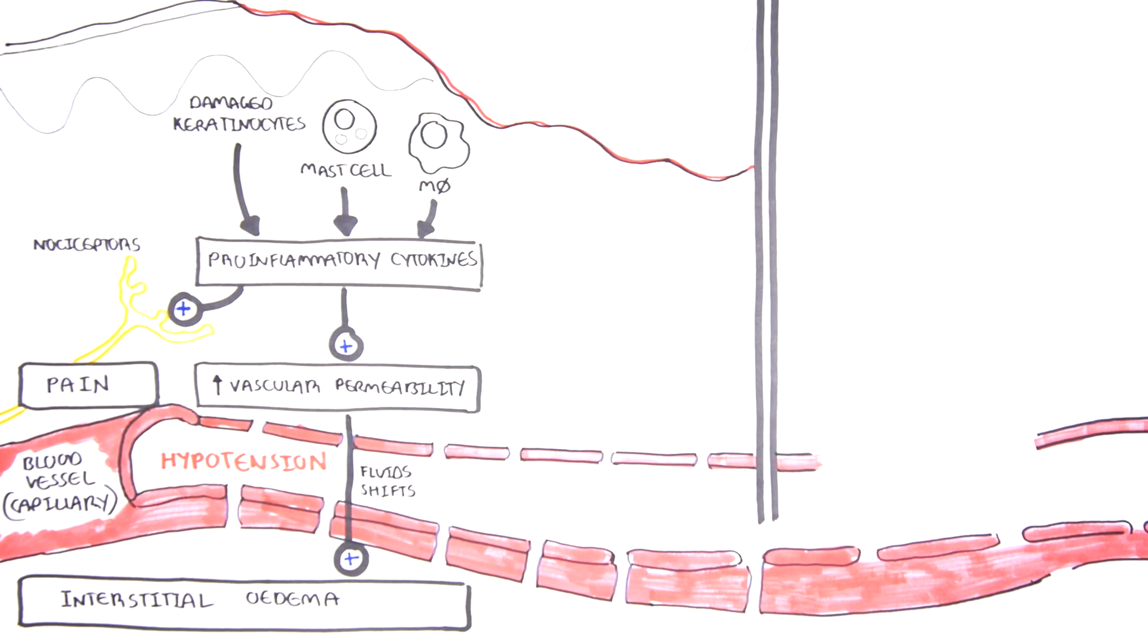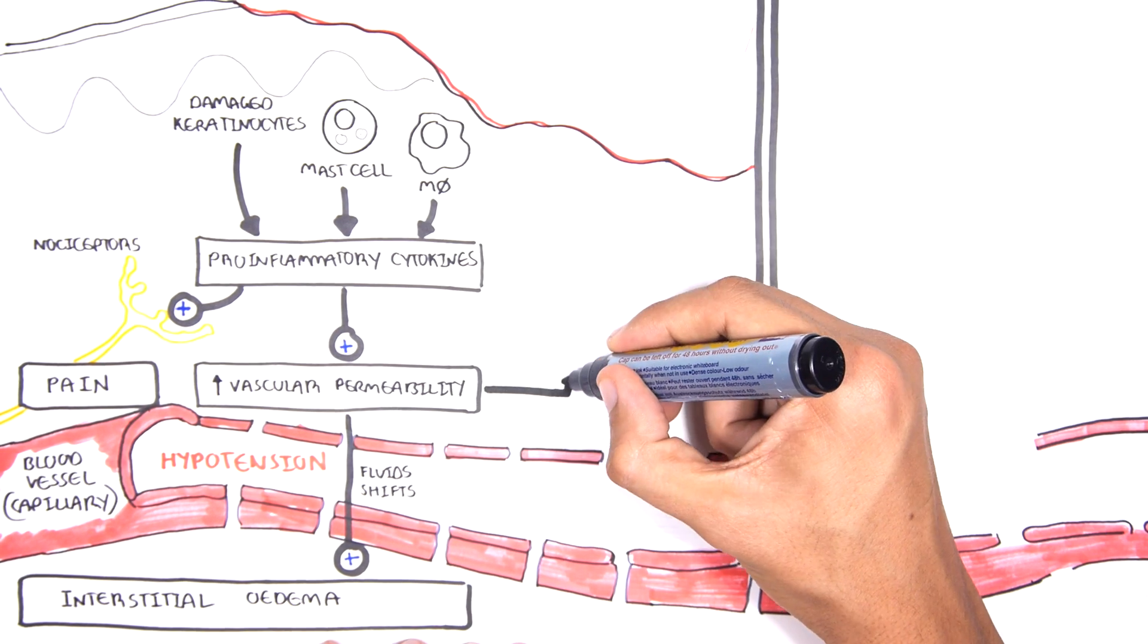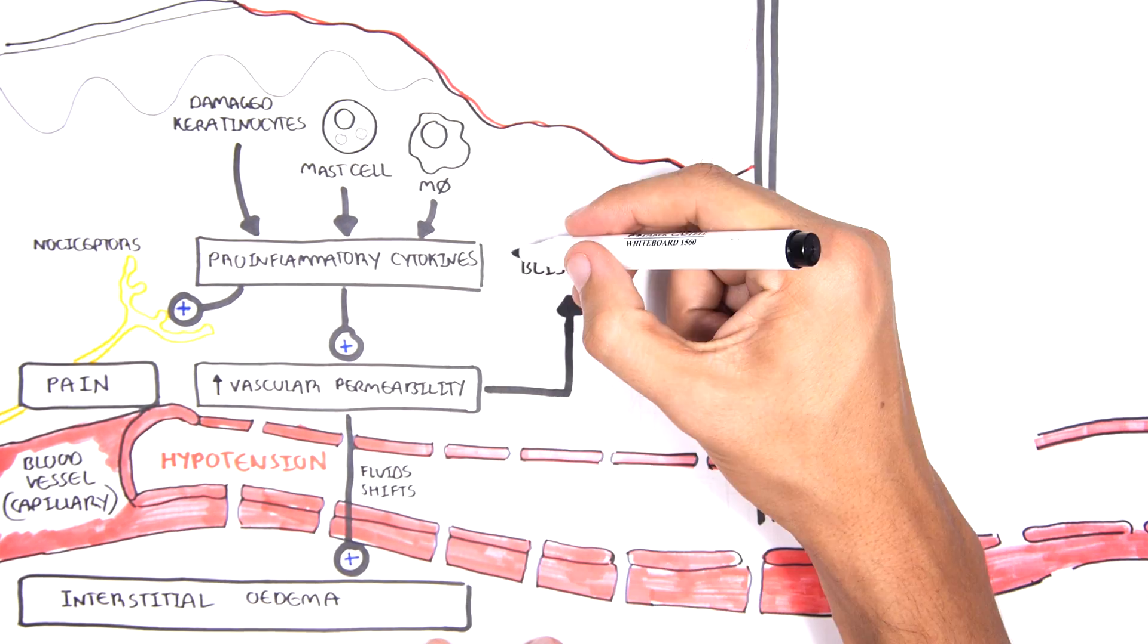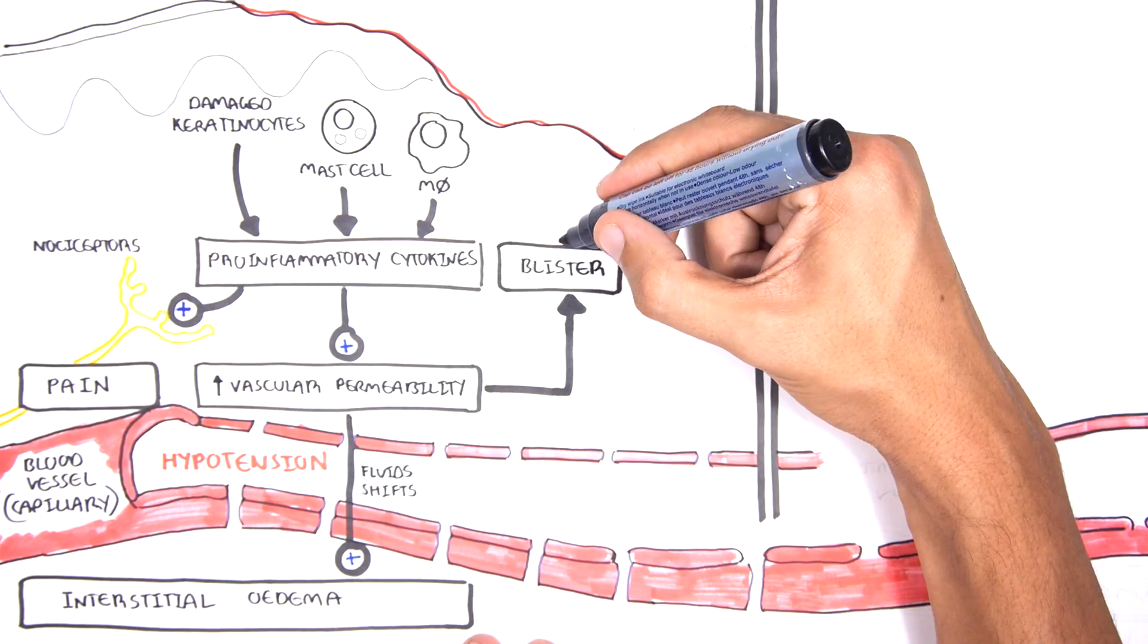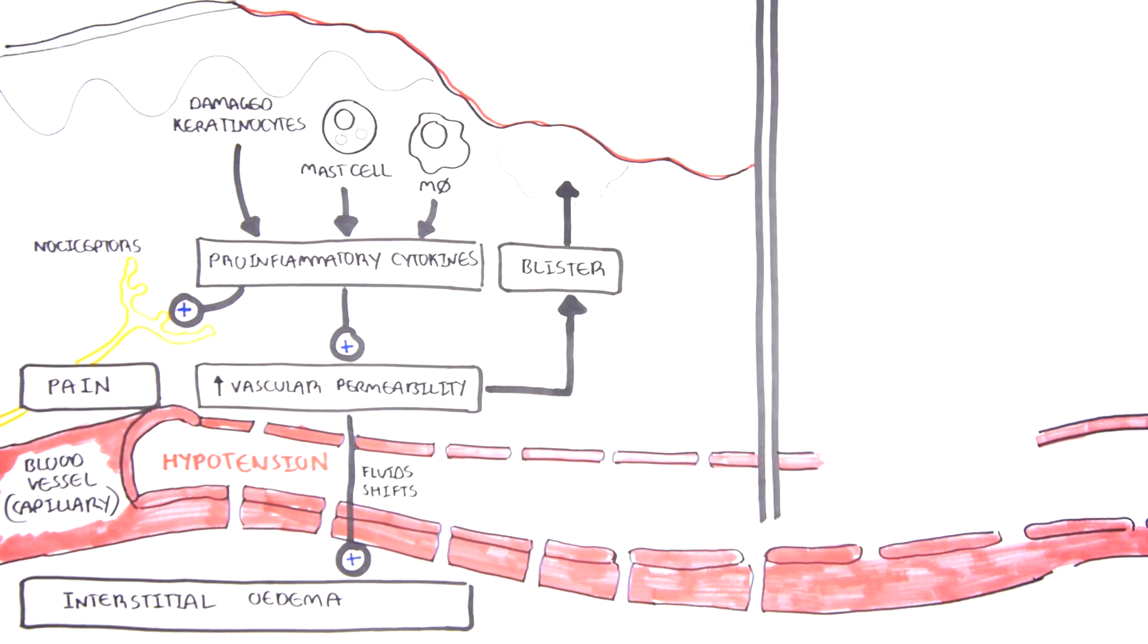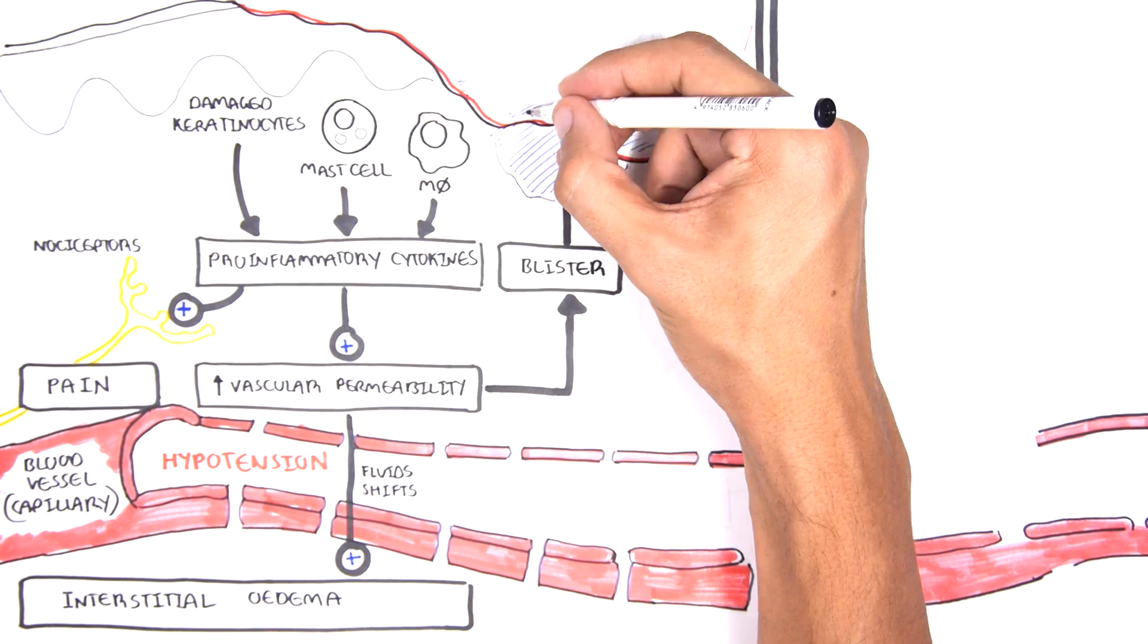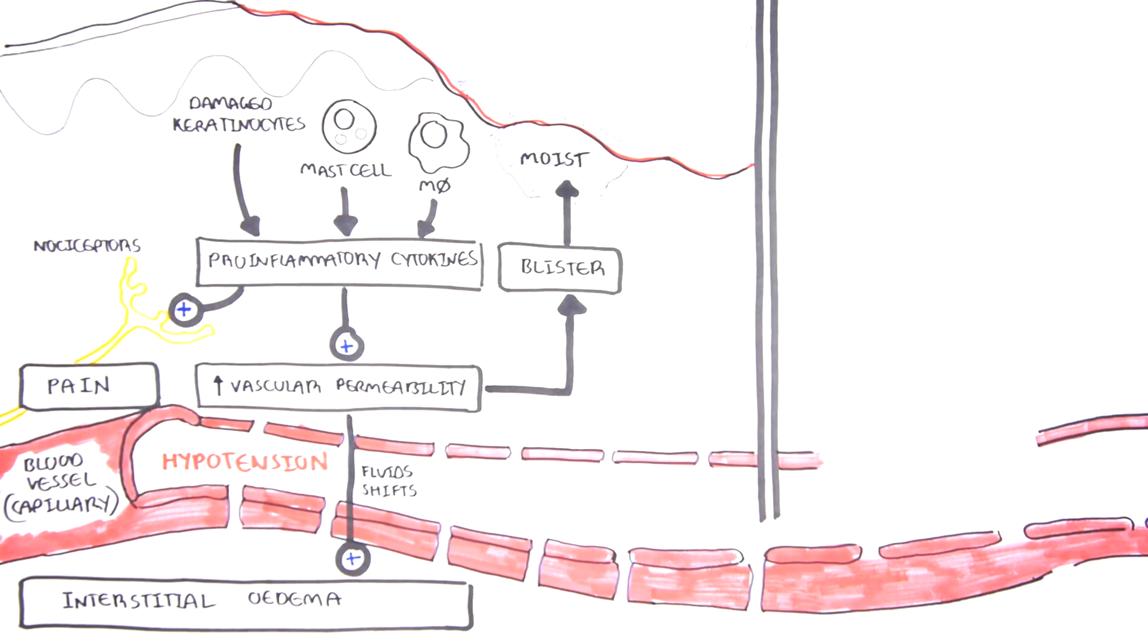Remember that the increase in vascular permeability causes fluid to leak out. The fluid can actually accumulate in one area, causing a blister on the skin surface. The sensitive blister can rupture and release fluid onto the damaged skin surface. Thus, superficial burns have a moist appearance.